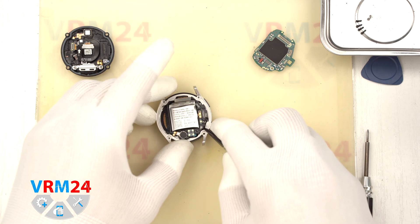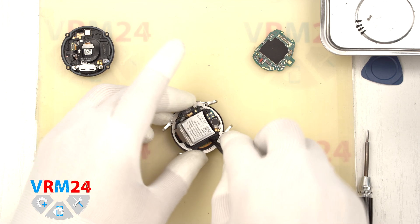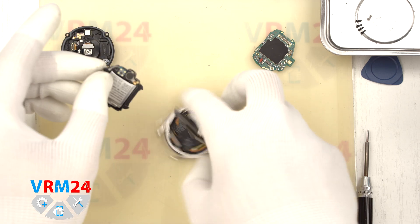We can also remove the frame, aka bracket. We gently lift and remove the frame. Inside the frame we have the battery.